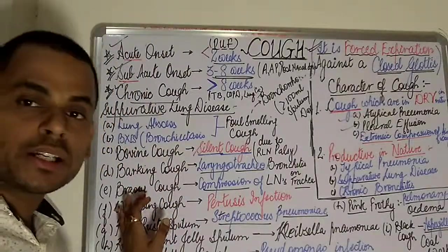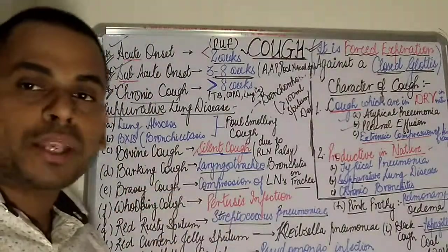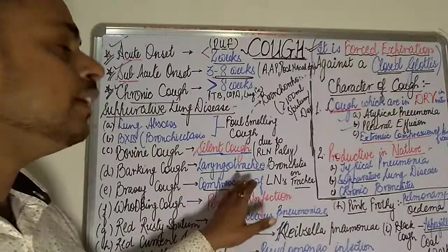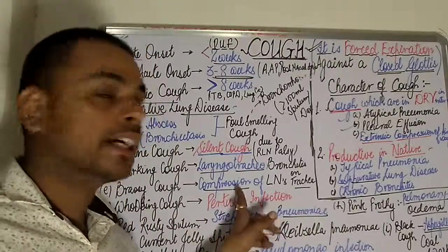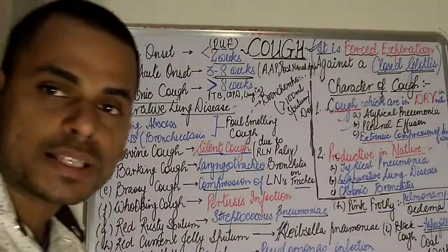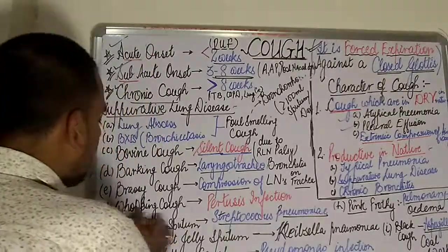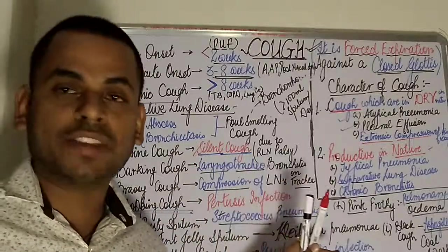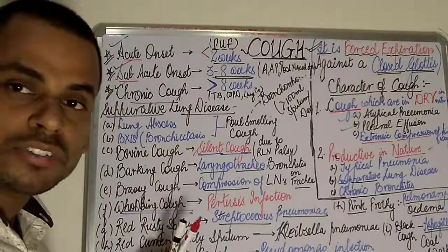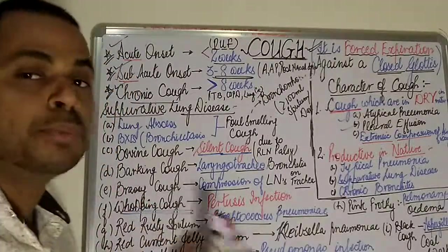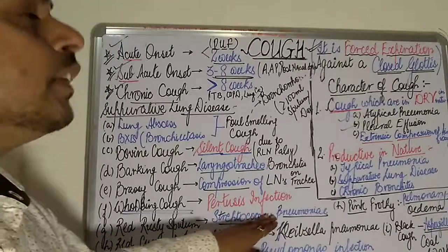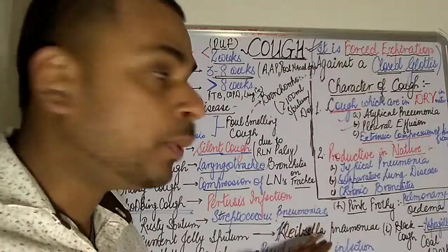Brassy cough is elicited whenever there is compression of the lymph nodes on the trachea. Whooping cough is present in pertussis infection. Red rusty sputum is seen in cases of Streptococcus pneumoniae infection.